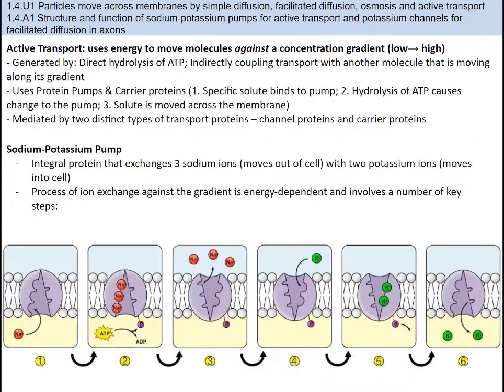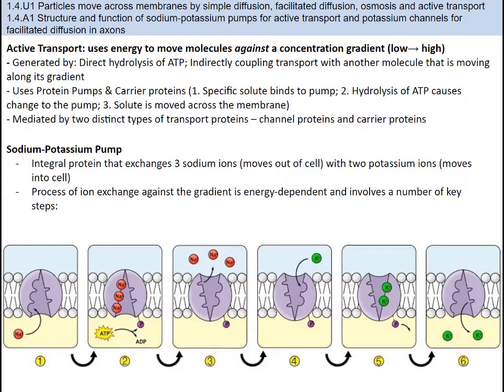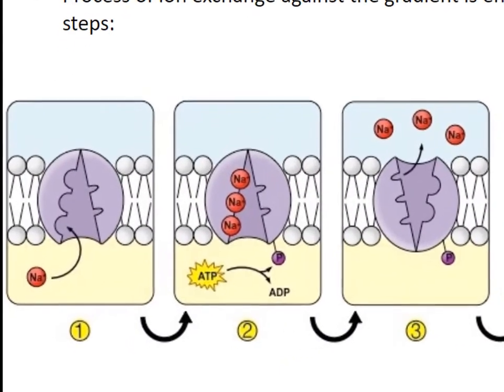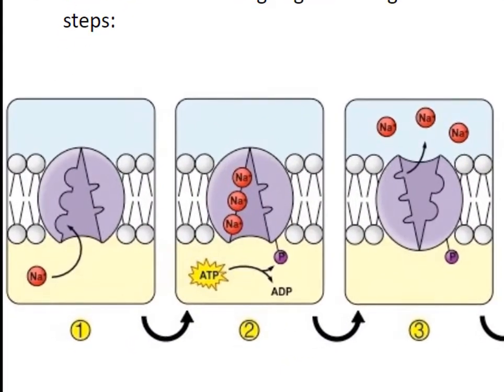The last type of transport we need to discuss is active transport. Active transport requires an energy input in the form of ATP and moves substances from low concentrations to high concentrations. Active transport uses protein pumps and carrier proteins, and specific solutes bind to the pump; then the making of ATP causes changes to the pump and the solute is moved across the membrane. Active transport is mediated by two distinct types of transport proteins: channel proteins and carrier proteins.